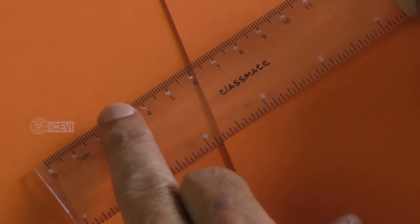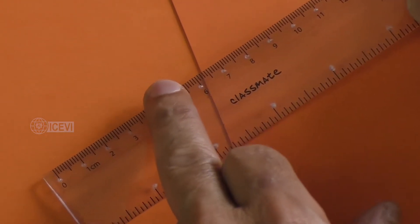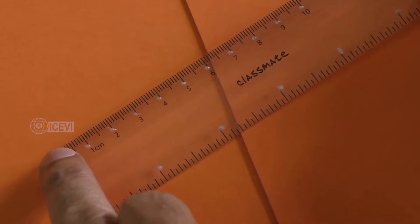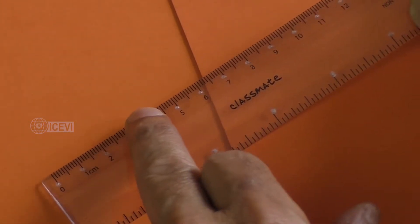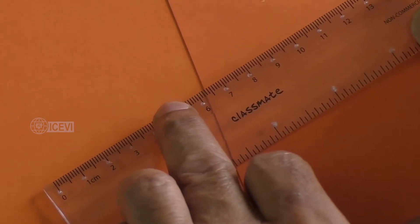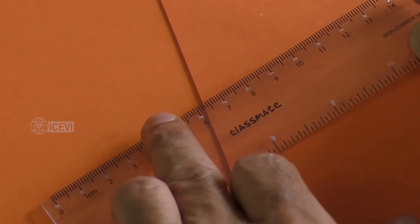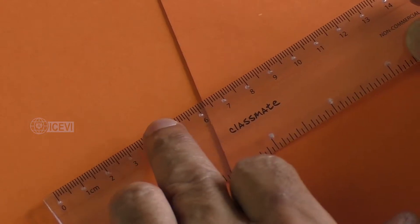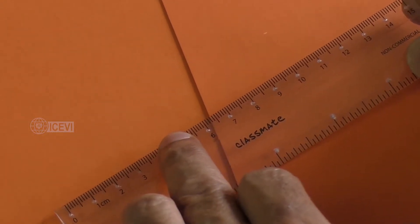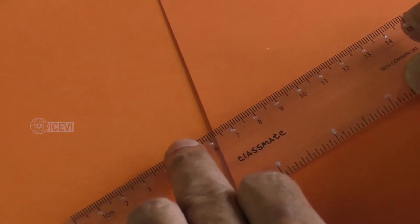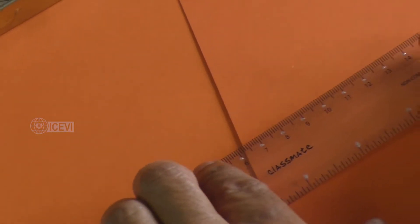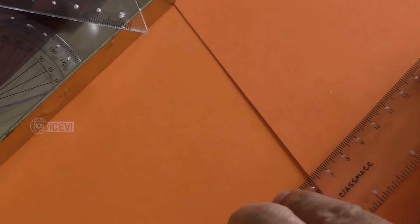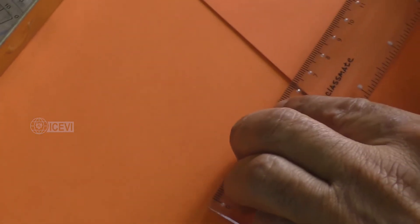Suppose you say four and a half centimeters. The child will be able to identify 1, 2, 3, 4. Now next is 5, so the child will be able to get an approximate measurement of four and a half, that is between 4 and 5. As this is a visual concept, accuracy cannot be expected in the case of visually impaired children, but somewhere between 4 and 5 should be okay.